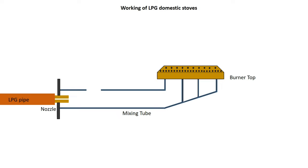The third part is the burner head, which is located at the end of the mixing tube. It produces the air-enriched fuel mixture over the ports for combustion. The design of the burner head controls the flame stability of the mixture through the individual ports and the angle of flame emitted.